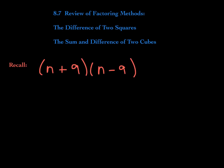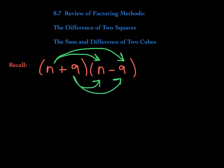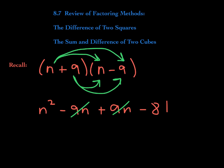To get us started and to understand how to factor a difference of two squares, I want you to consider multiplying these two binomials. We distribute: n times n, n times negative 9, 9 times n, and 9 times negative 9. When we distribute, we get n squared, negative 9n, plus 9n, minus 81. You can see that these two terms are opposites, so they cancel, leaving you with just n squared minus 81. This is a difference of two squares.